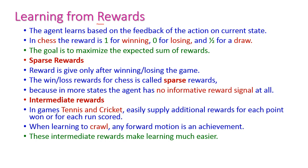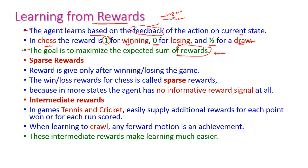Reinforcement learning is otherwise called as learning from rewards. The agent learns based on the feedback of an action on the current state. The feedback will be either positive or negative — positive feedback means you get reward points, negative feedback means you get penalty points. Taking chess as an example: reward 1 is for winning the game, reward 0 is for losing, or 0.5 for a draw. The goal is to maximize the sum of rewards.